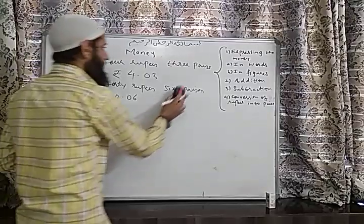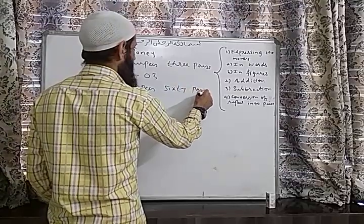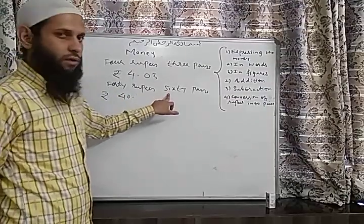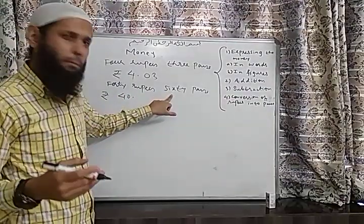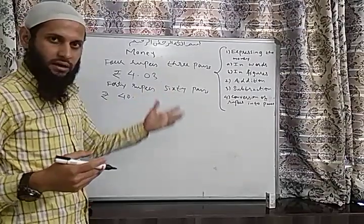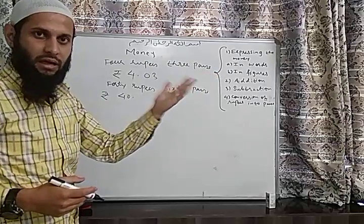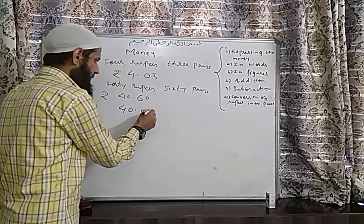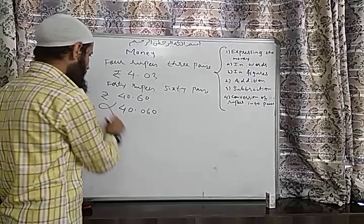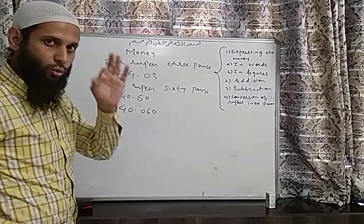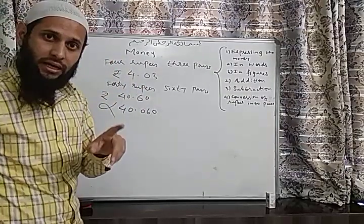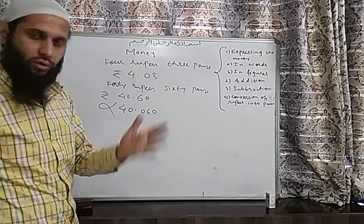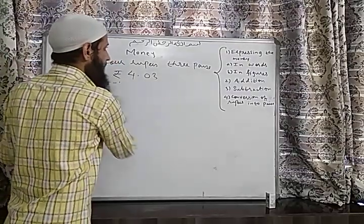Now if I tell you: write 40 rupees 60 paise — how will you write it? You write the rupee sign, write 40, then the point. Now 60 is not a number from 1 to 9, so you do not need to add a leading zero. You simply write 40.60. That was the expression of money in the form of figures and words.